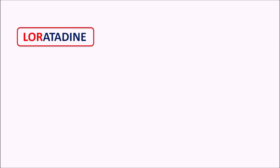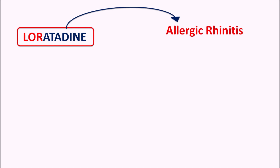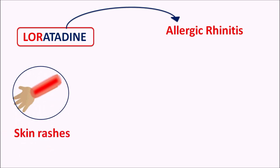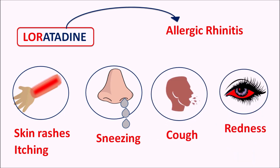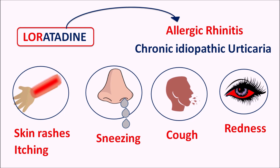Being an antihistamine, loratadine is particularly used in the treatment of allergic rhinitis. The symptoms associated with seasonal allergic rhinitis can be controlled by loratadine, and it can control both nasal as well as non-nasal symptoms. Conditions like allergic skin rashes, itching, sneezing, cough, and redness of the skin and eye can all be controlled by loratadine through antagonism of histamine receptors. This drug can also be used in chronic idiopathic urticaria, both in adults and children with age greater than 2 years.